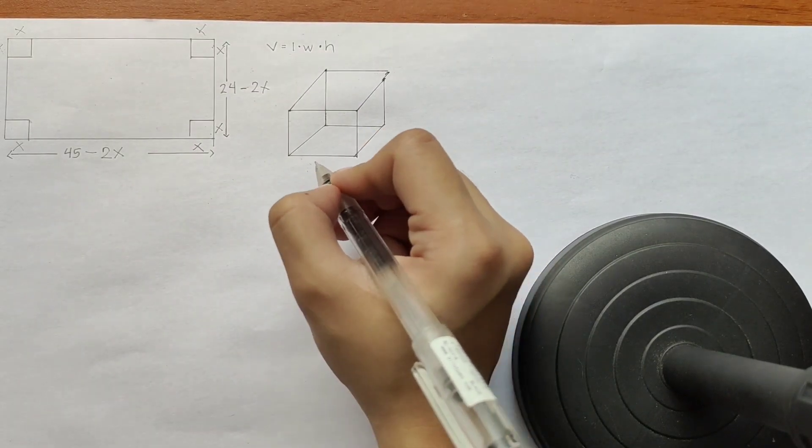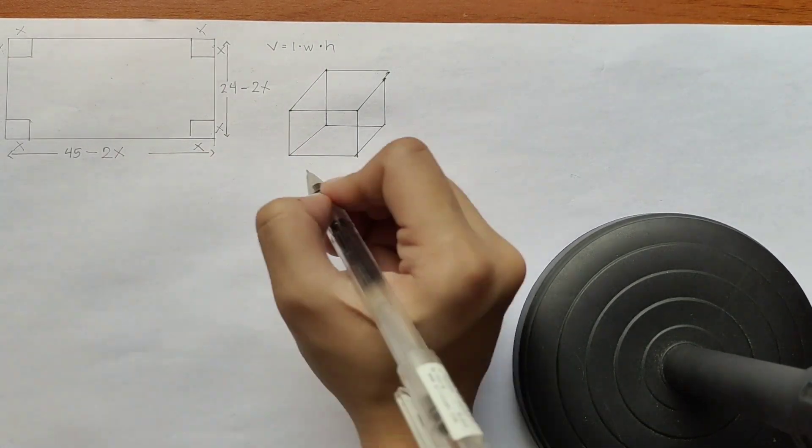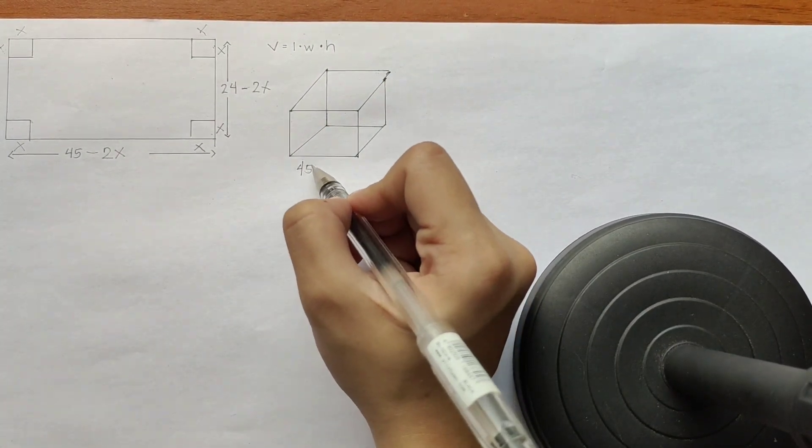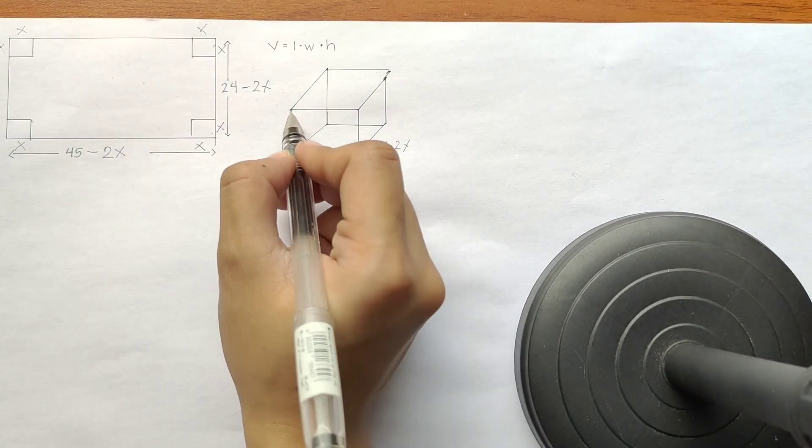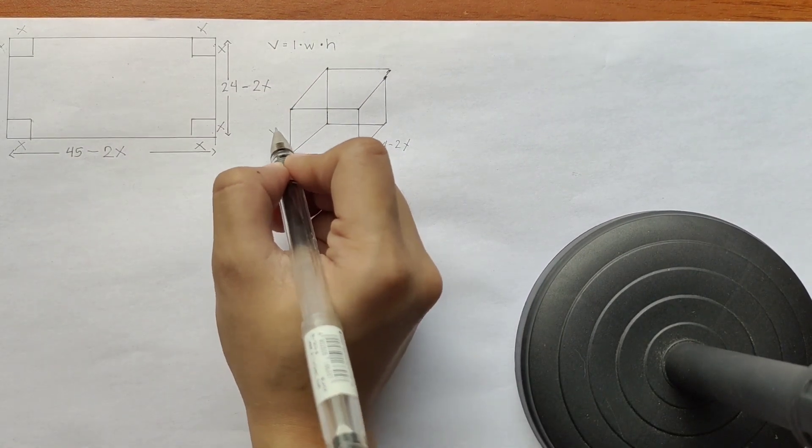I have now the length. So this is our box. We have our length, which is 45 minus 2x. And the width should be 24 minus 2x. And we have the height, which is simply x.